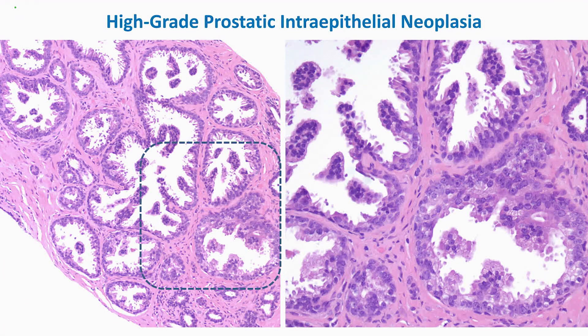Here is another example of high-grade prostatic intraepithelial neoplasia. You can see some degree of complexity of the overall architecture and papillary projections; nuclei may be easily identifiable. There are enlarged nuclei with prominent nucleoli, and at high power most of the cells lining these glandular spaces have enlarged nuclei and prominent nucleoli.